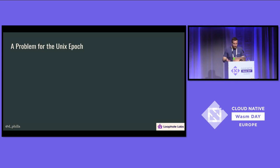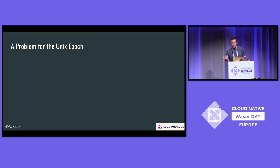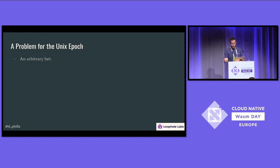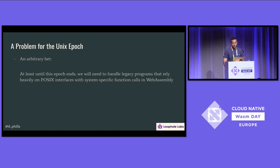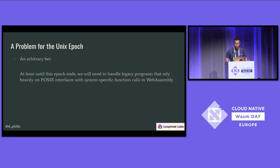Syscalls and WebAssembly is a problem for the Unix epoch. I have an arbitrary bet that I'd like to start this talk with. At least until this epoch ends, we will need to handle legacy programs that rely heavily on POSIX interfaces with system-specific function calls in WebAssembly. The epoch ends in 2038 — the year 2038 problem. I feel like we're gonna need to handle POSIX and Unix-based programs in WebAssembly until then.